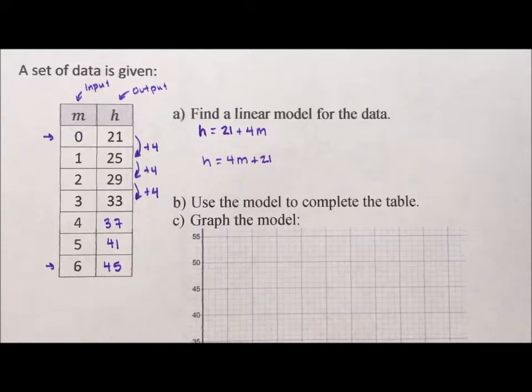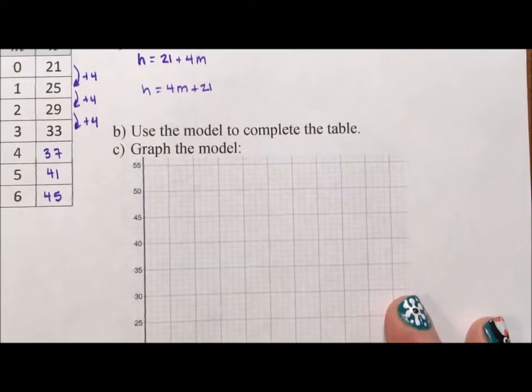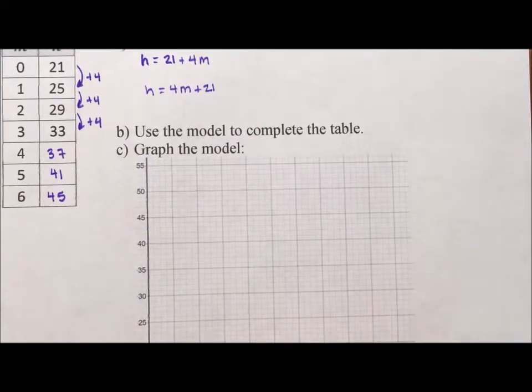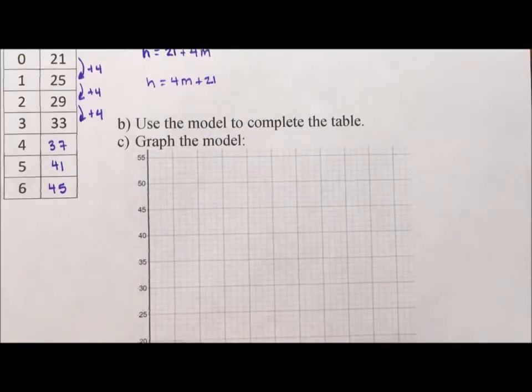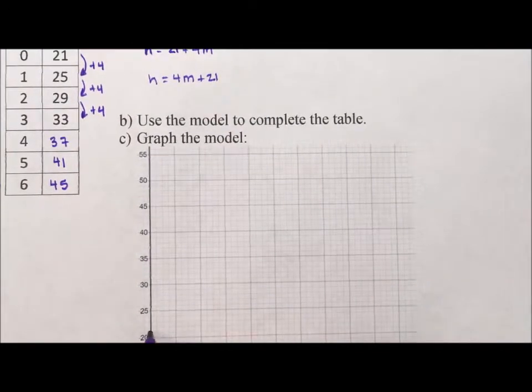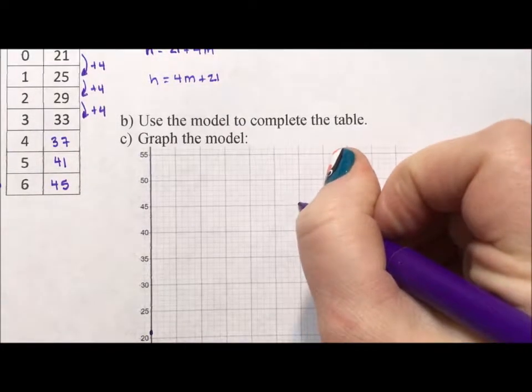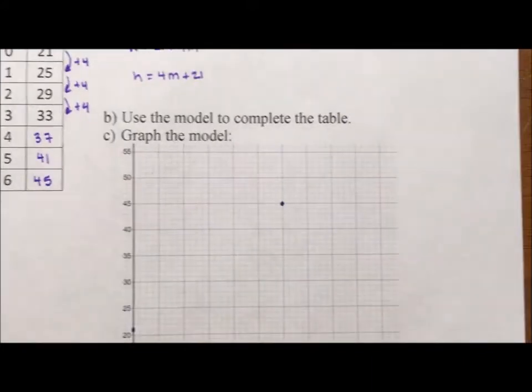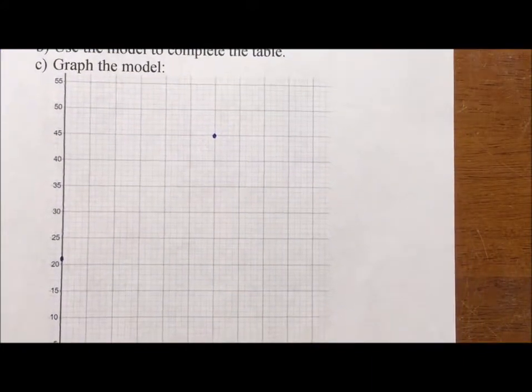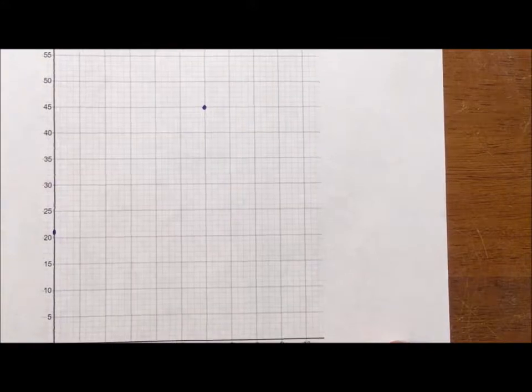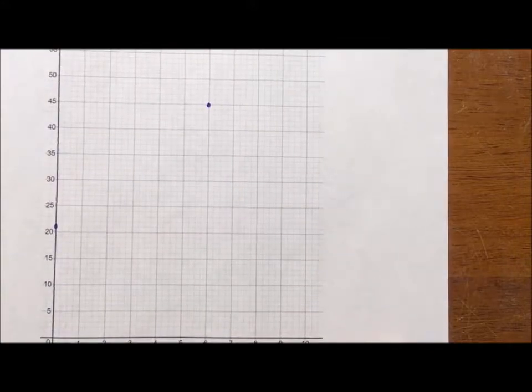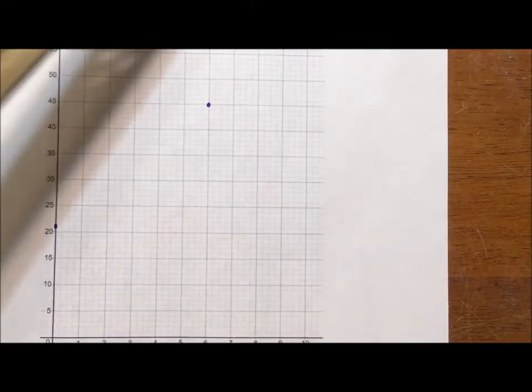So I would graph, if I were to graph this, and I am, I would graph 021, which is right here. And then I would go all the way out to 645. And I would graph the point 645. And then when I had those points graphed, I would then go and get a straight edge, get a ruler, and connect the dot.